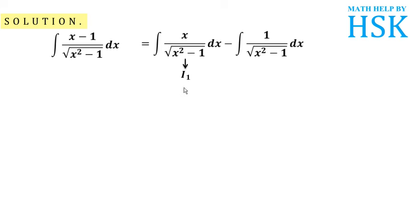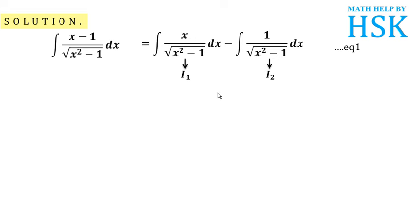I assume the first integral is equal to i1 and the second integral is equal to i2, and this whole expression I call equation number 1. I am going to separately calculate the value of i1 and i2 and substitute into this equation to get the answer.